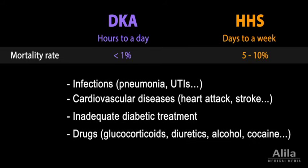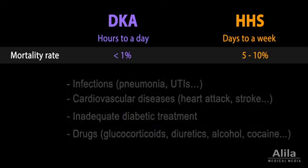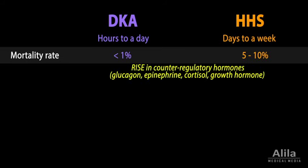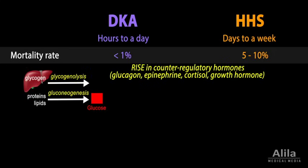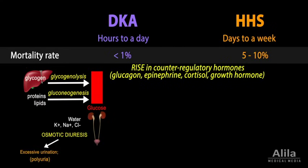Similar to DKA, the rise in counter-regulatory hormones is the major culprit. These hormones stimulate further production and release of glucose into the blood, causing it to overflow into urine, resulting in excessive loss of water and electrolytes.